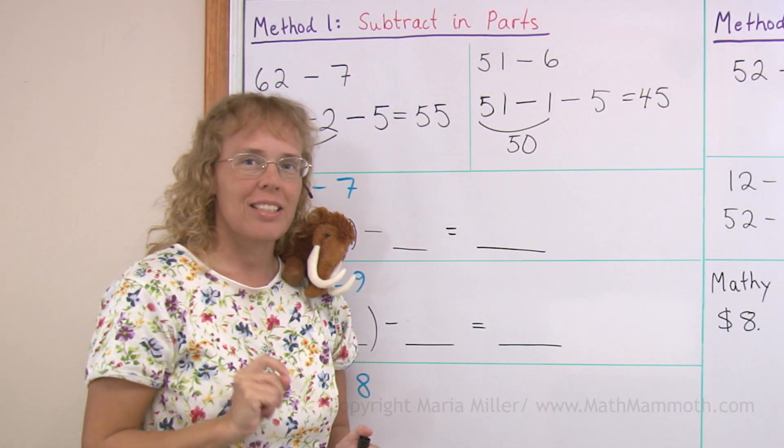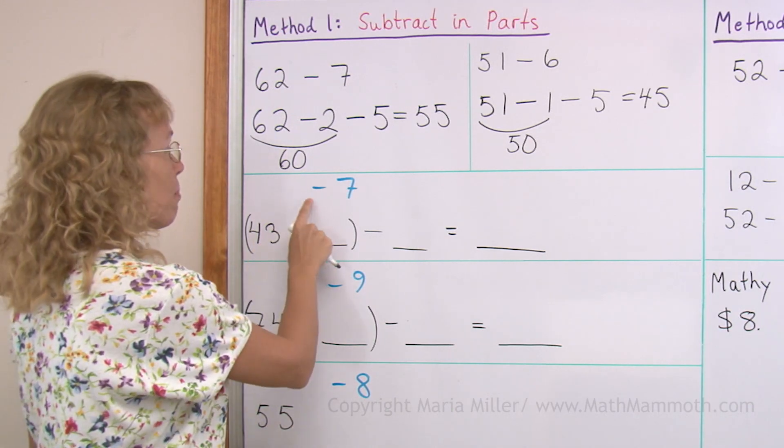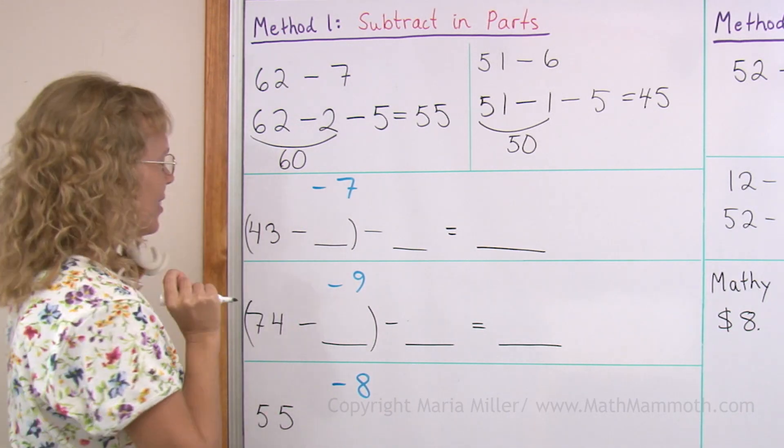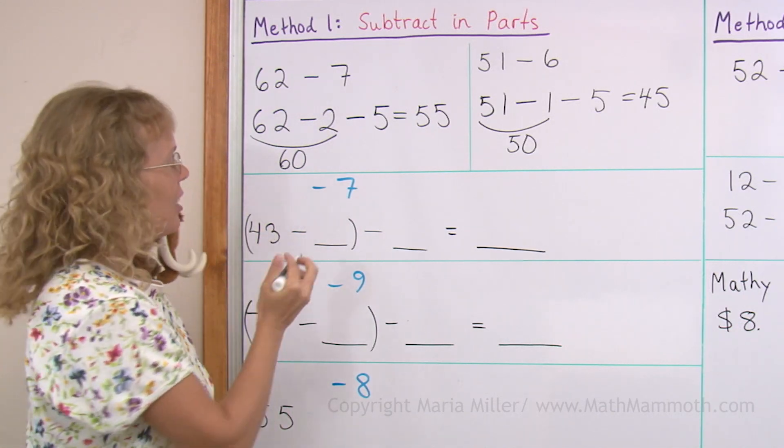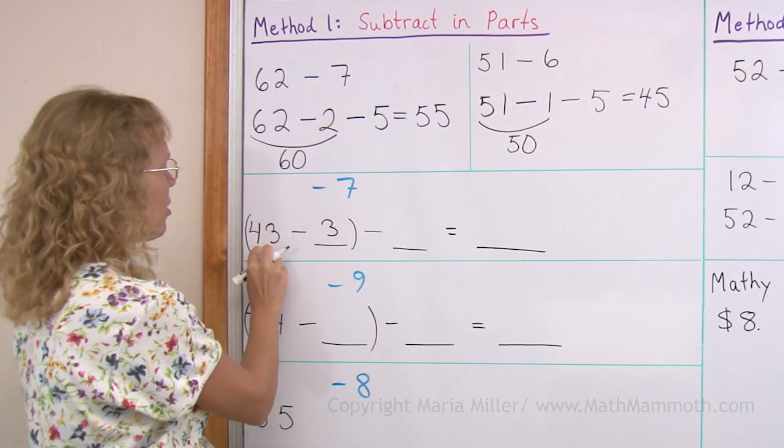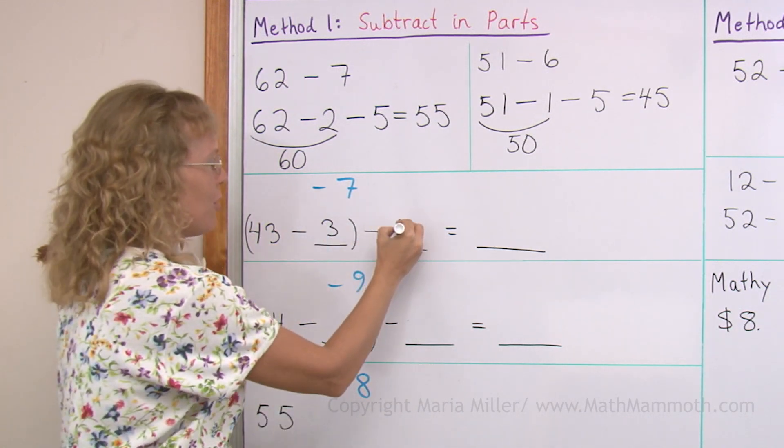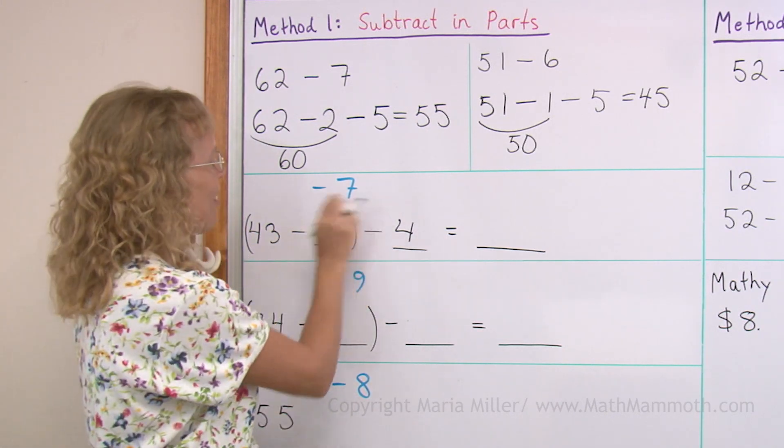Now let's practice that strategy a few more times. 43 minus 7. We subtract that 7 in two parts. First, so that we have 40 left. So you take away 3, right? 43 minus 3. And then some more. 4 more.